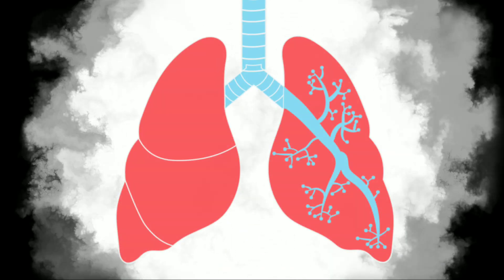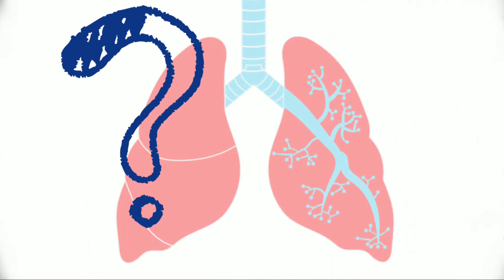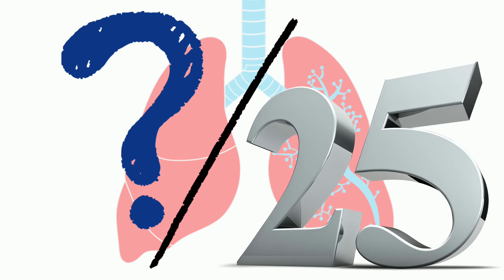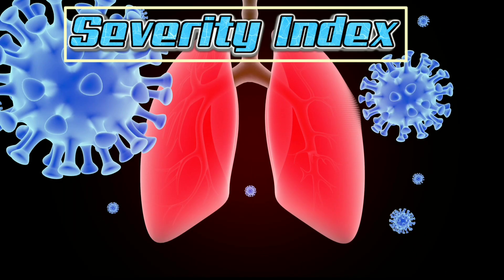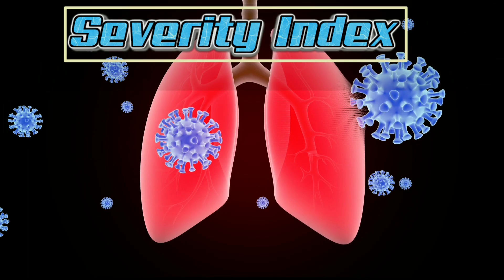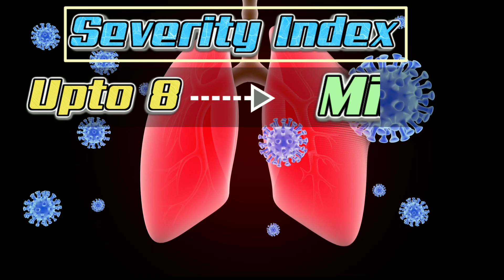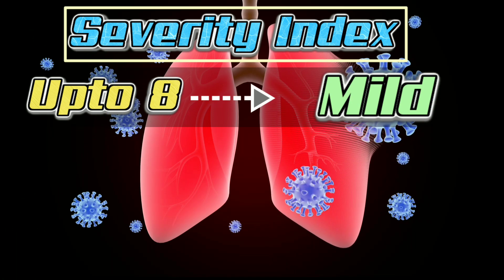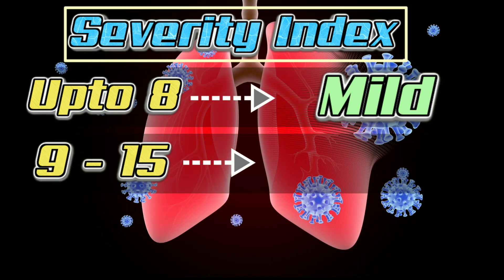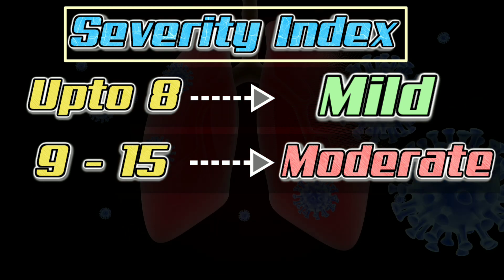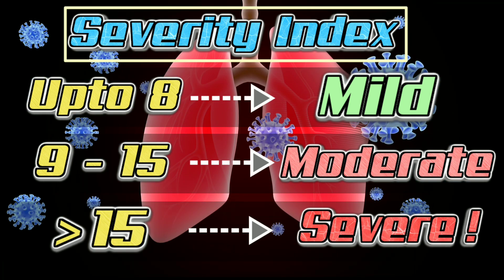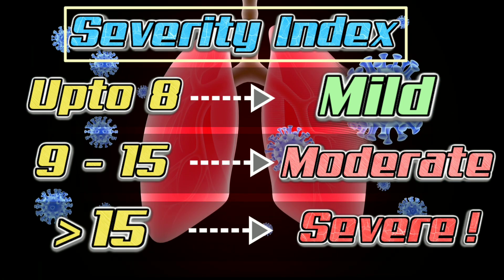All five lobes are graded in the same way, and you get a final severity score out of twenty-five. If the final score is up to eight, it's mild and has the best prognosis. A severity score ranging from nine to fifteen is moderate severity, but when it crosses fifteen, it's severe and quite alarming.